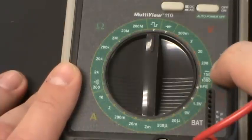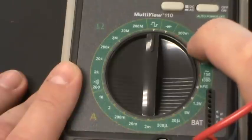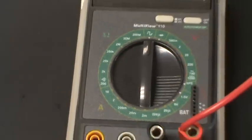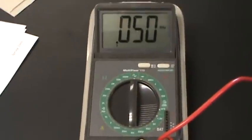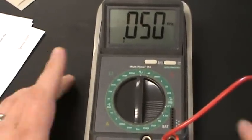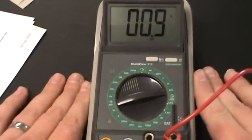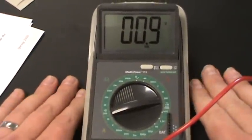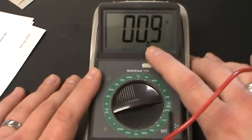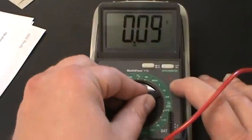But what is this 200, 20, 2, and 200M? Let me zoom out just a little bit so that we can see the display. So if I turn this to 200, it's telling me that the reading is 0.9 on the 200 scale. Well what does that mean?